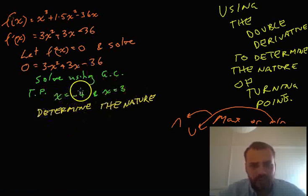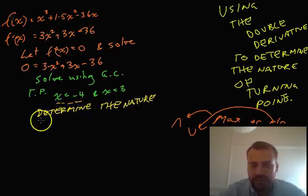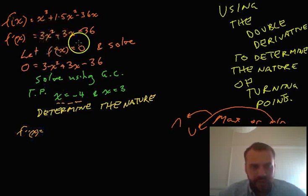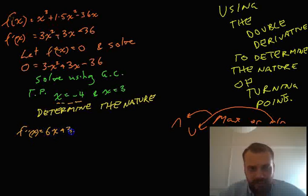So we're going to determine the nature of this turning point here, the x equals negative 4 first. I'll do that one and then I'll show you on our pictures why it's working. Now, first of all, we need to know what the double derivative is. So, f double dash x. Now, that's going to be the derivative of this, which is going to be 6x plus 3.